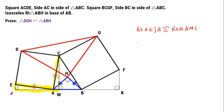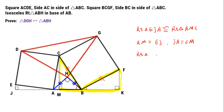So we get AM equals EJ, and JA equals CM. Then focusing on right triangle CMB and FKB, these two right triangles are also congruent. So we get MB equals FK, and BK equals CM.